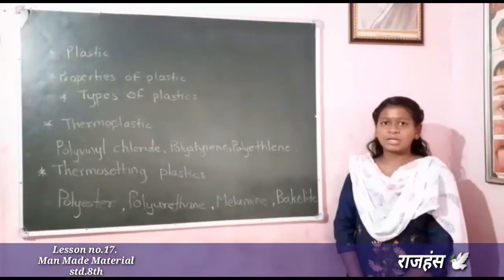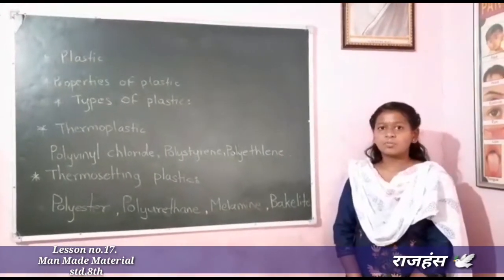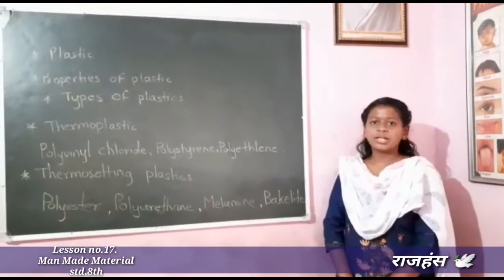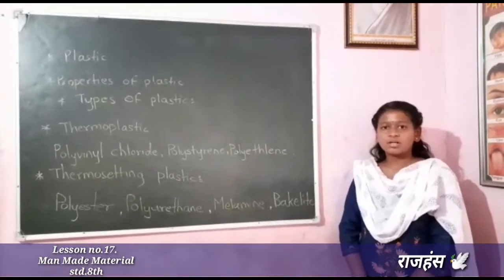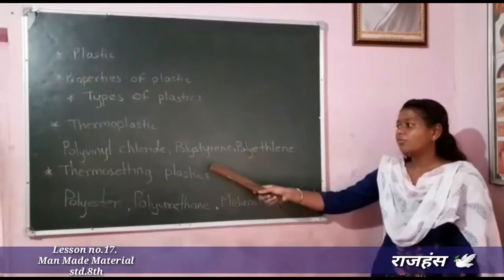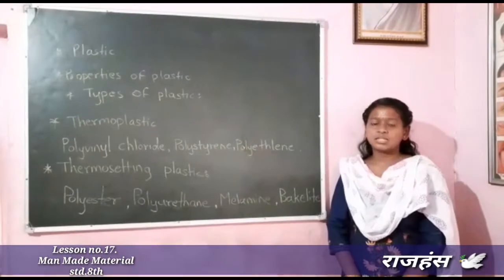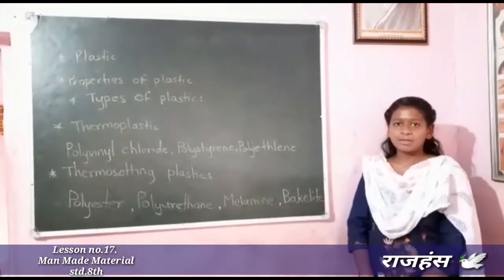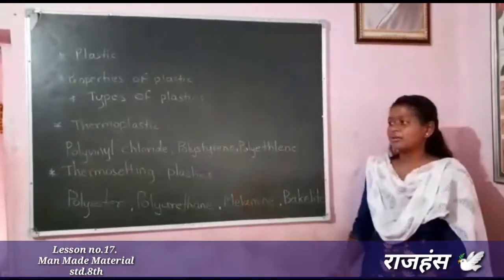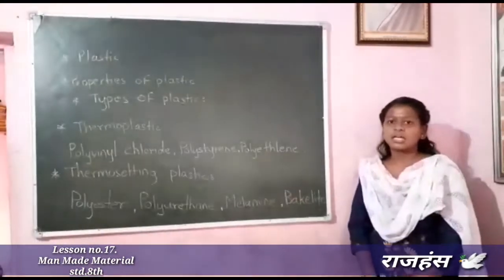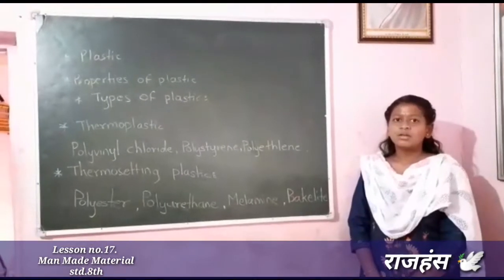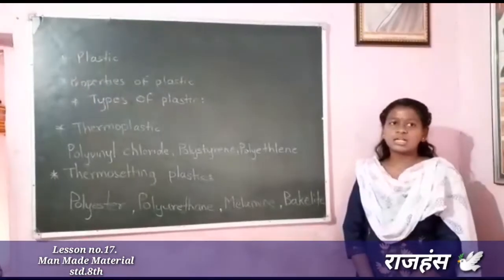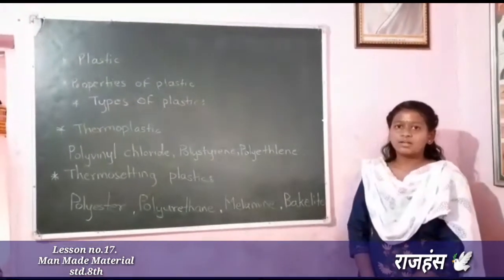Thermoplastic is a plastic to which a man gives a mold and it is shaped — that is called thermoplastic. Thermosetting plastic is one to which a mold is given but it cannot be changed by heat. Examples of thermoplastics are bowl, plate, PVC, etc. Examples of thermosetting plastics are switch, cooker handle, etc.